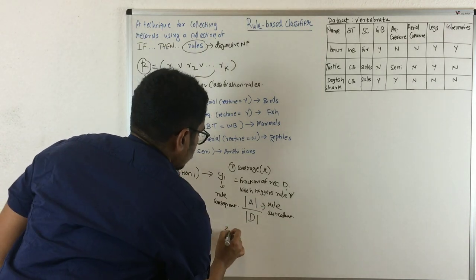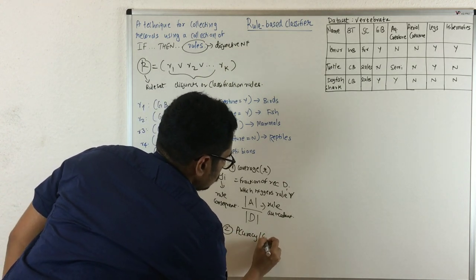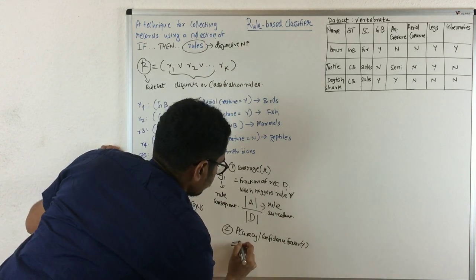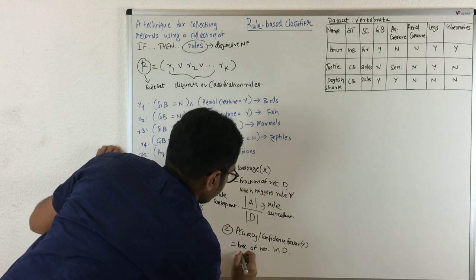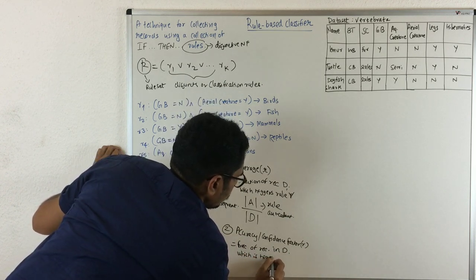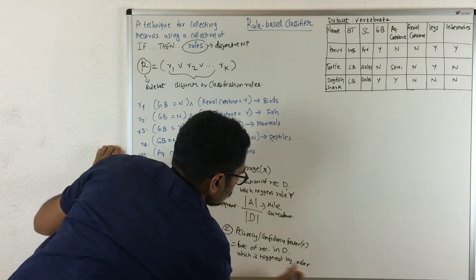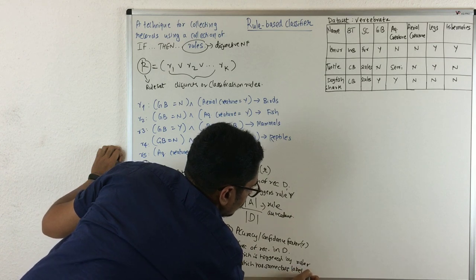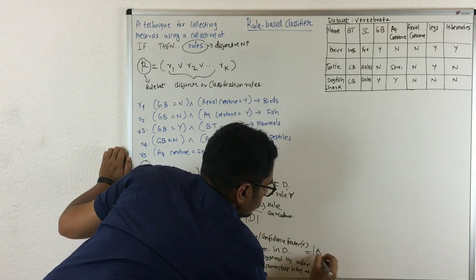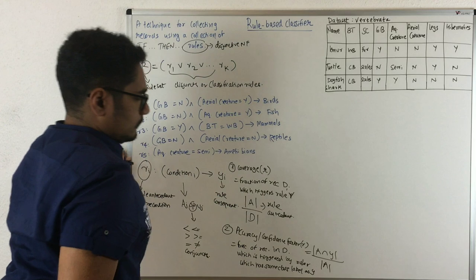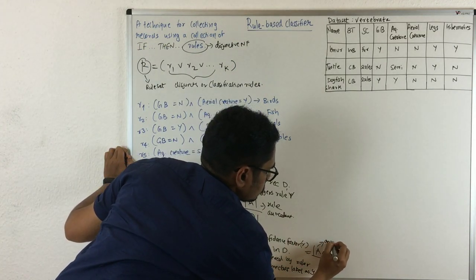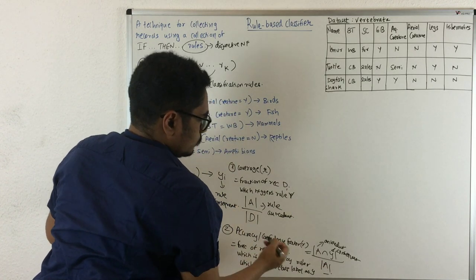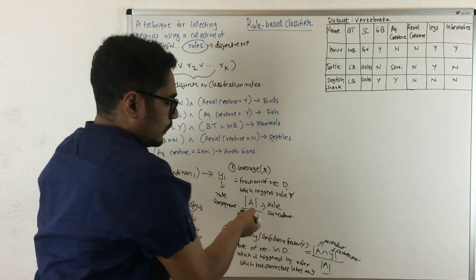The second measure is accuracy, also called confidence factor. Accuracy of a rule is the fraction of records in dataset D which is triggered by rule R and which has the same class label as Y. This is given as |antecedent ∩ consequent| divided by |antecedent|. The two denominators are different - here you have total number of records, and here you have the antecedent.